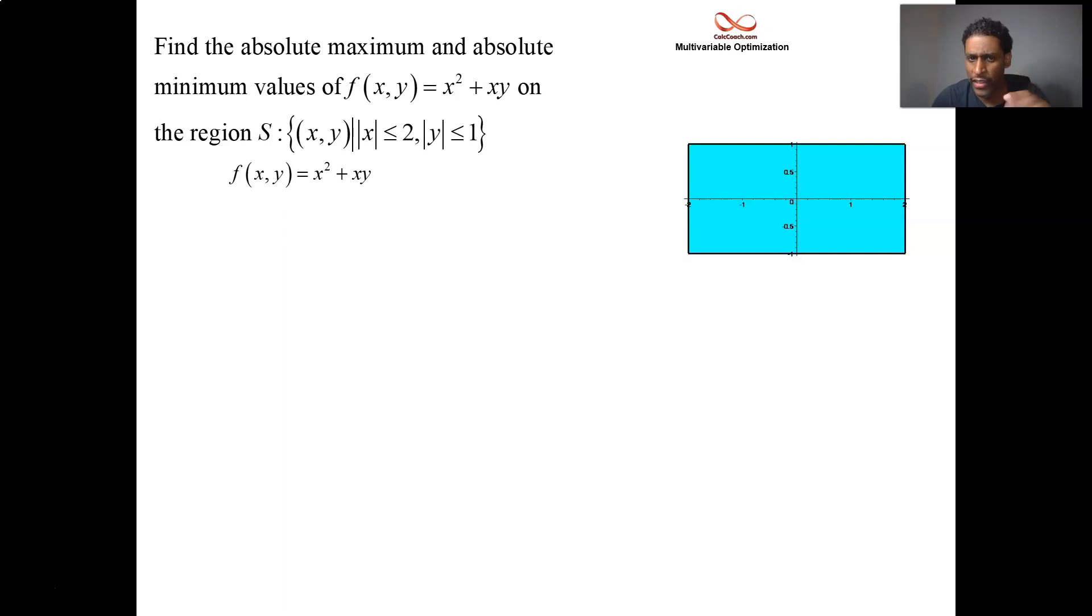Part one, critical point that might be on the inside. Take the x partial, set it equal to zero. Take the y partial, set it equal to zero. So the x partial is 2x plus y, and the y partial is x. If both of these are equal to zero simultaneously, coming from the y partial, we know that means x equals zero, and taking that information to the x partial, that means y is also going to be zero. The origin, (0,0), on the list, gets into the club.